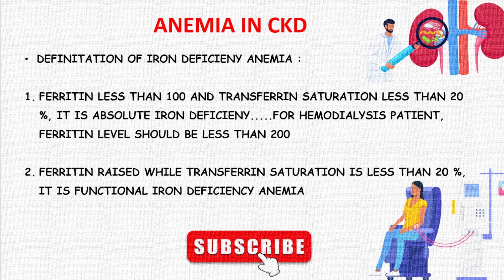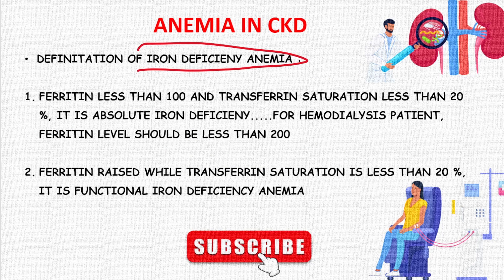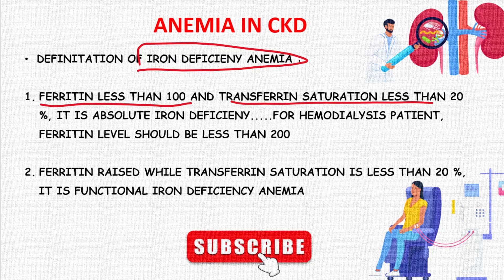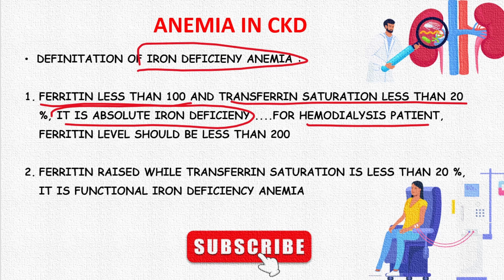What is the definition of iron deficiency anemia in CKD? It has a different definition. There are two types. The first is absolute iron deficiency, which is defined as ferritin less than 100 and transferrin saturation less than 20%.